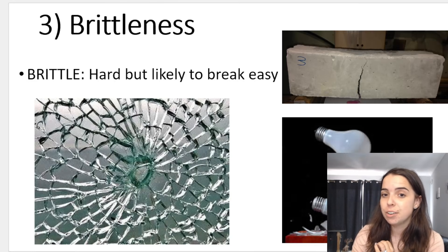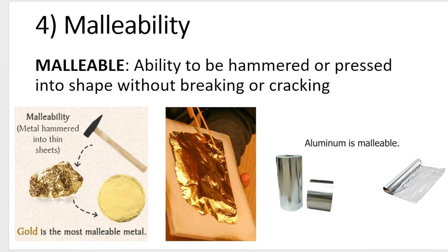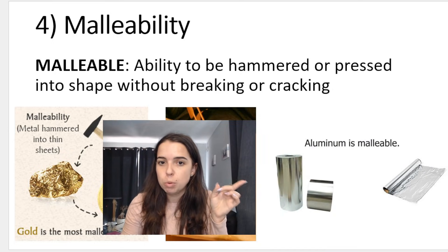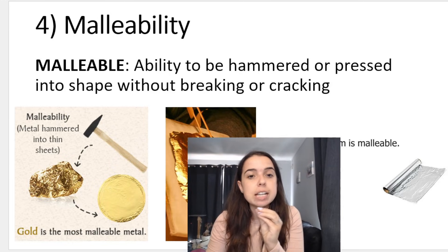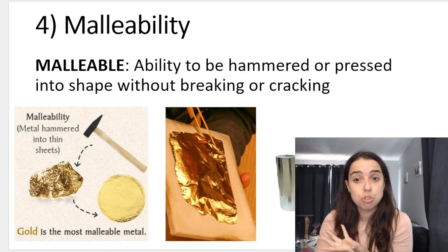Then we've got brittleness. Brittle materials are hard but they break or crack easily — like glass. Glass is hard, but it can crack; it is brittle. Then we've got malleability. If something is malleable, you are able to hammer it or press it flat or into shape without it breaking or cracking. A lot of metals are malleable. For example, aluminum — tinfoil is made from aluminum, pressed into a flat thin sheet. Gold is very malleable, which is why it makes a great material for jewelry.